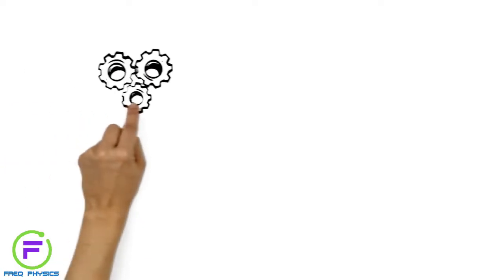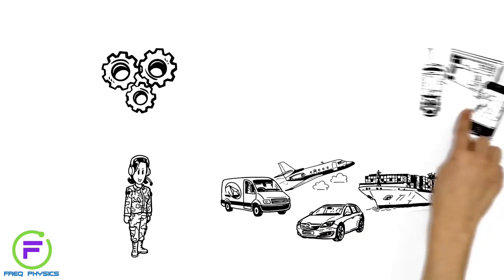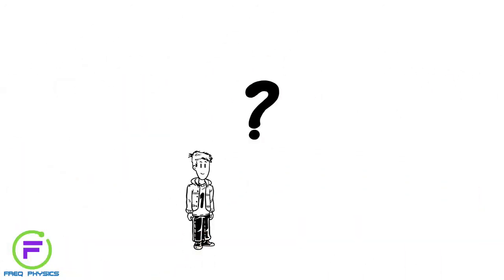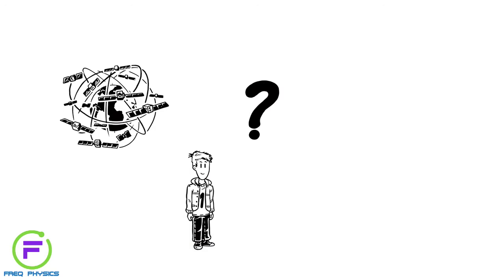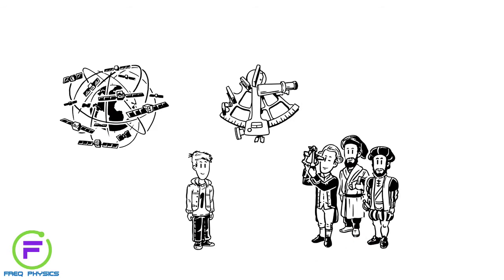GPS was originally developed for the US military, but is today available in numerous vehicles and electronic devices. So, how does GPS calculate your position, with the same mathematical measurements that our ancestors used?